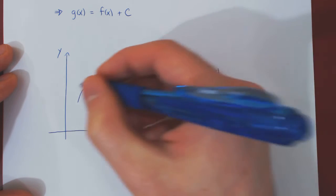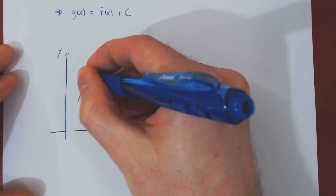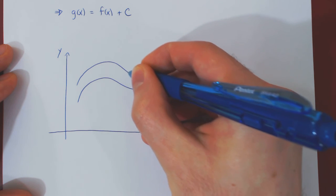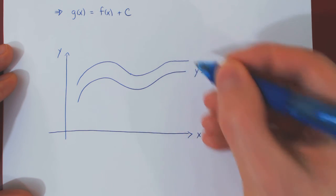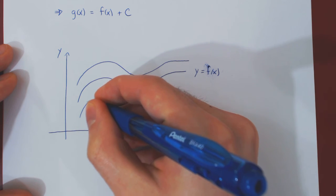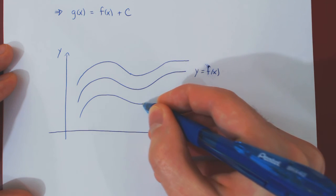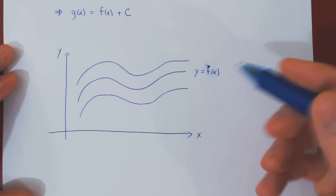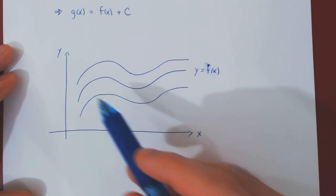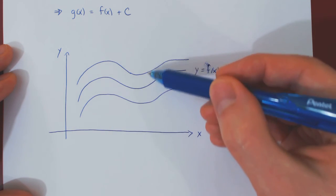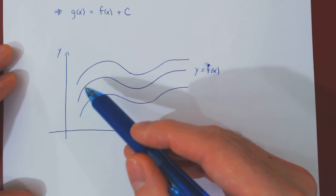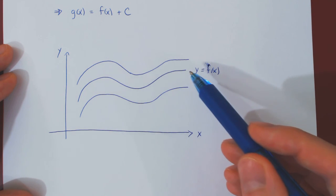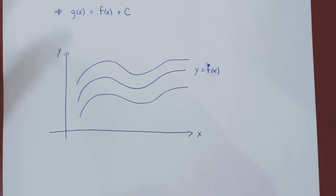So you could, of course, translate the function up. I'll try and make it look semi-decent. Or, of course, translate it down. And that's it. So up to a vertical translation, the derivative determines the shape of a graph completely.